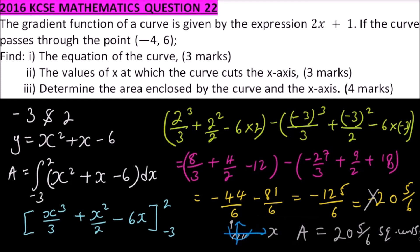You get a mark for integrating, a mark for substituting the limits, a mark for the working, and a mark for the final answer — 4 marks in total. The answer is 25 over 6 square units, and that is how you work out that question.